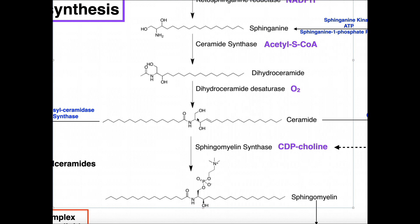In other words, we put a palmitoyl group on the nitrogen, substituting the acetyl group. The double bond is added by oxidation through molecular oxygen, and that gives us ceramide. Ceramide is the product of this pathway, and it has a number of things it can do from here.